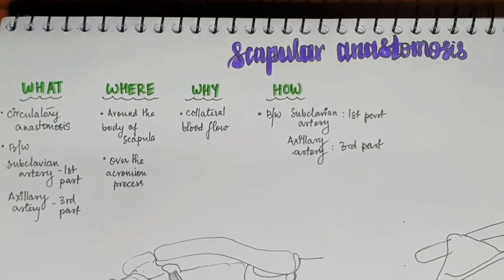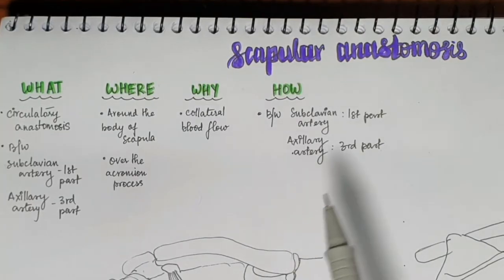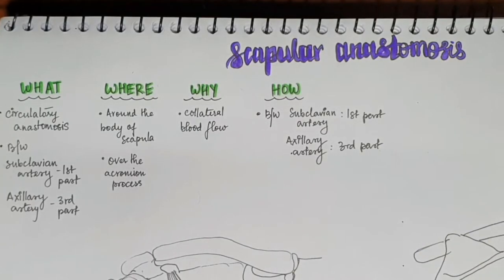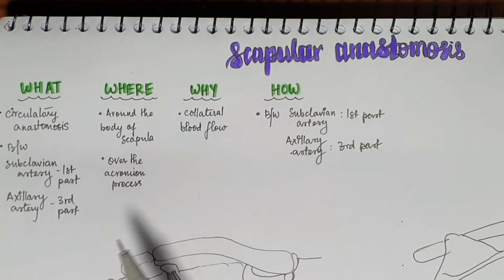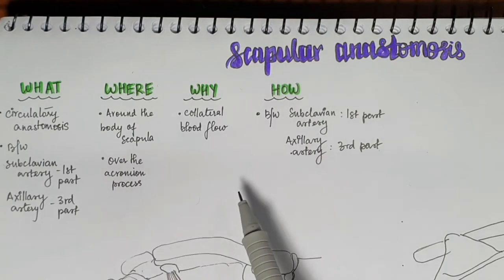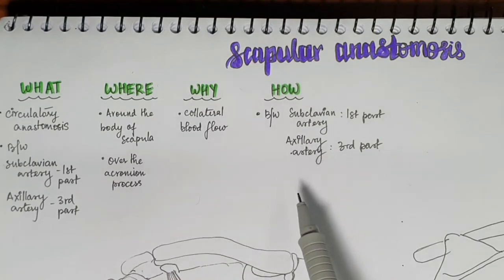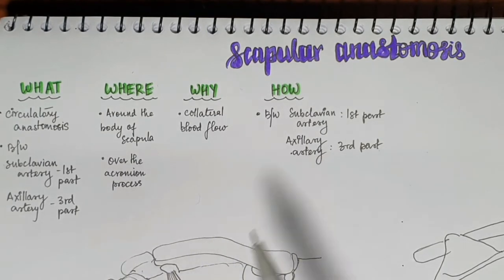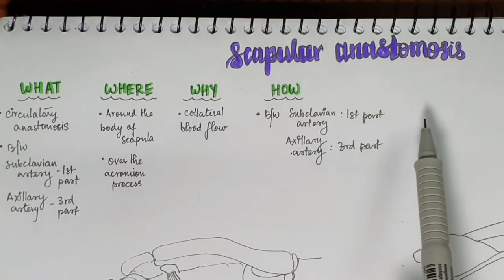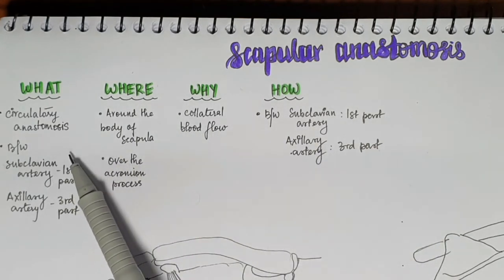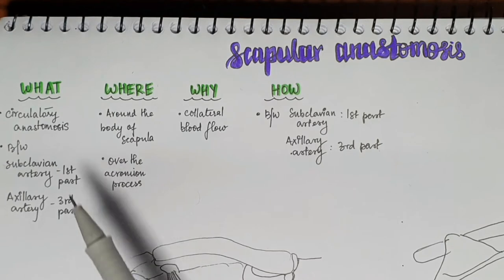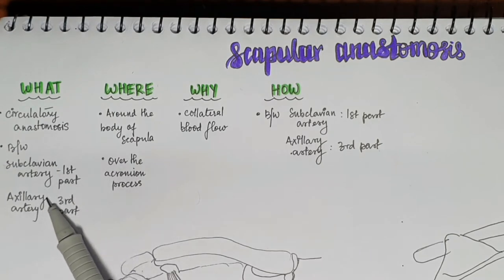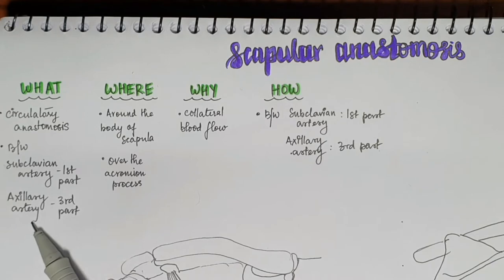Hello and welcome to this video on the scapular anastomosis. We'll begin by analyzing the four questions: what, where, why, and how. The scapular anastomosis is a circulatory anastomosis formed between the first part of the subclavian artery and the third part of the axillary artery, which will be discussed in detail.